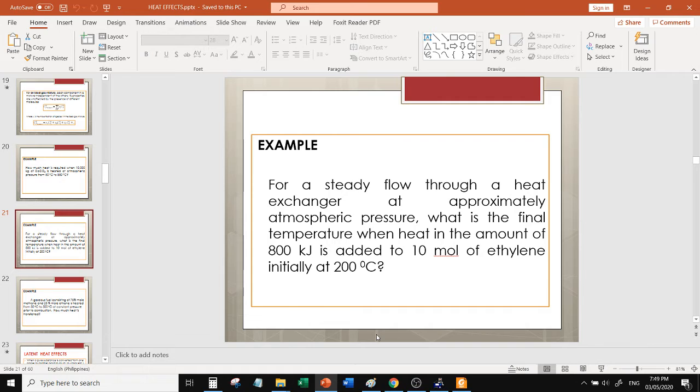Okay, in this video we will answer this problem. For a steady flow through a heat exchanger at approximately atmospheric pressure, what is the final temperature when heat in the amount of 800 kilojoules is added to 10 moles of ethylene initially at 200 degrees Celsius?